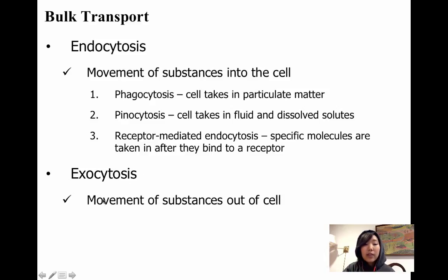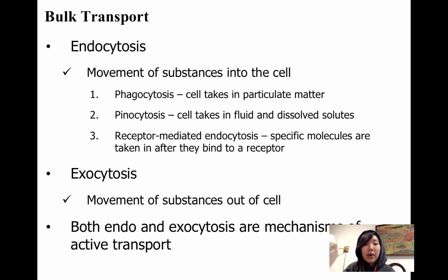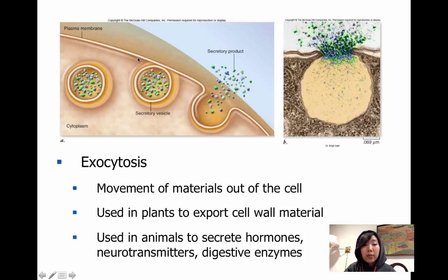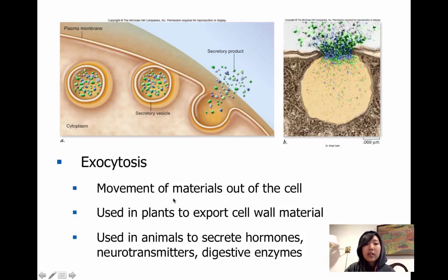Exocytosis is when the cell ejects things outside of itself — the opposite of endocytosis. Both of these processes require energy. Here is a picture of exocytosis: you can see a vesicle coated with a membrane that starts to fuse with the plasma membrane. As it fuses, everything inside gets sent to outside of the cell. This can be used to move materials outside the cell or to transport cell wall material to the cell wall.